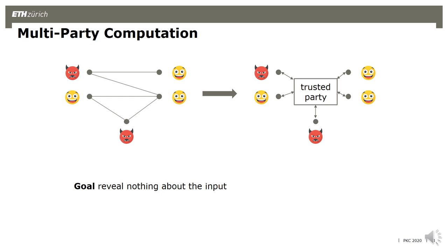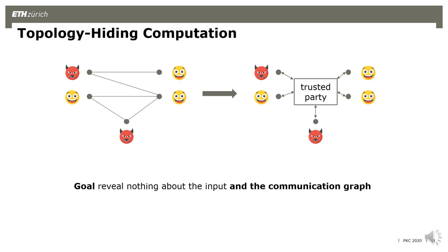Parties communicate via a complete network and they want to hide the communication graph. One justification could be, for example, a social network where parties communicate with their friends via Facebook and they don't want to reveal who their friends of friends are.